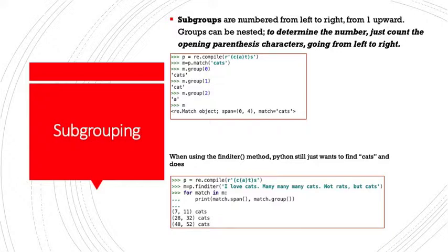When using find iter, the find iter method, which we haven't spoken about yet, Python still just wants to find cats and does. This is the default. It's as if we said here, match.group0. So what we're actually returning in the print statement is span, the span, so where does it start, where does the group start, where does it end, and the actual content that we're bringing back against the match.